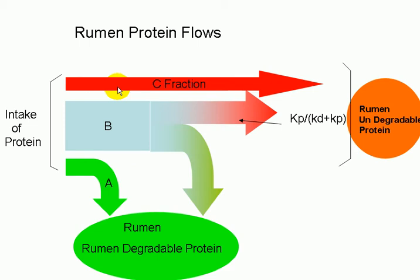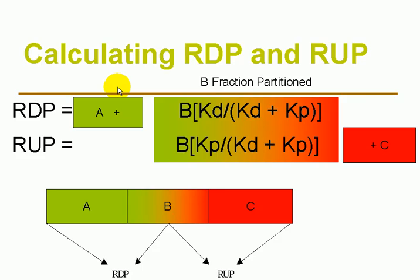Notice how these two fractions sum to one to indicate the entire B-fraction. The rumen-degradable protein consists of the A-fraction plus the B-fraction times K-D divided by K-D plus K-P. The rumen-undegradable protein is composed of the C-fraction plus the component of the B-fraction that passes, which is K-P divided by K-D plus K-P. Here you see how the various partitions of rumen-degradable and undegradable are presented.